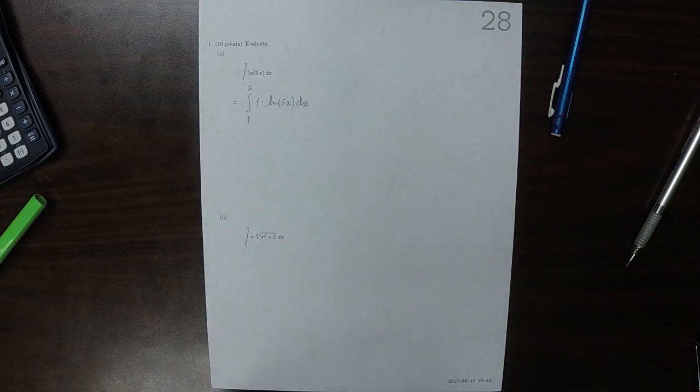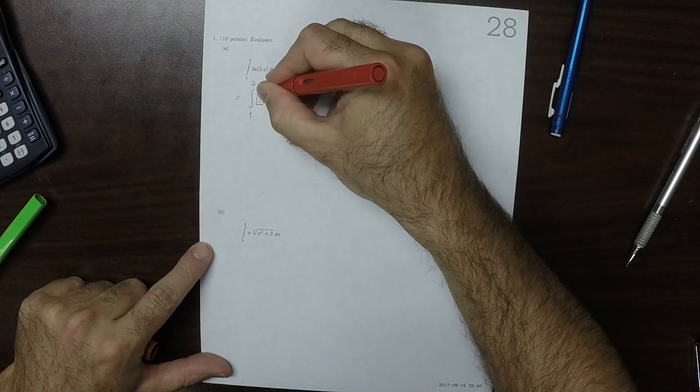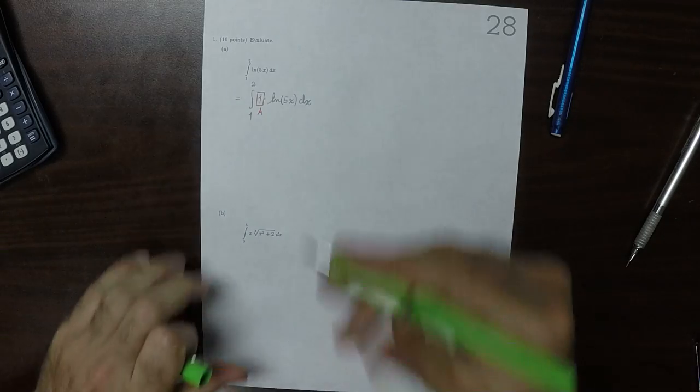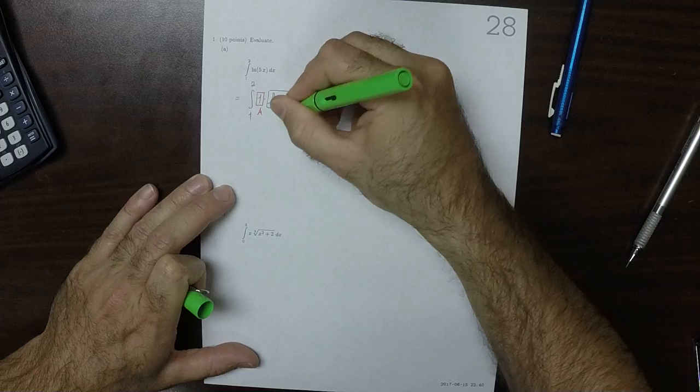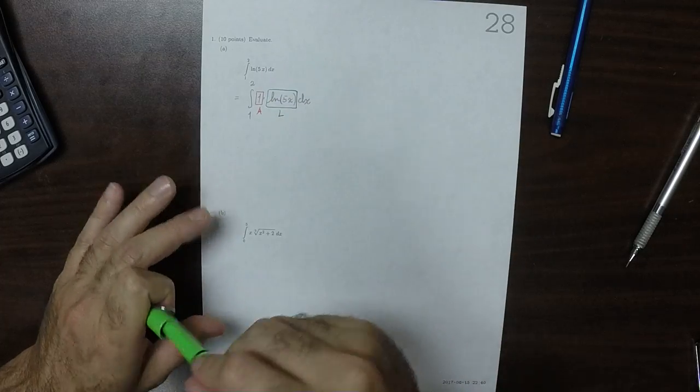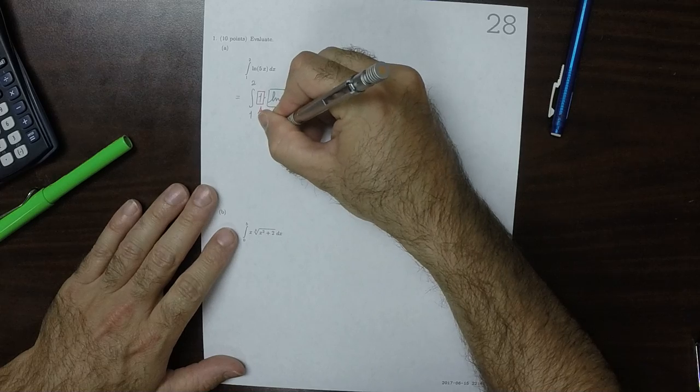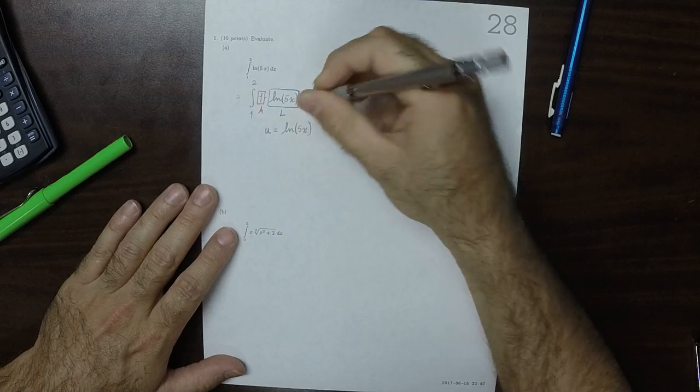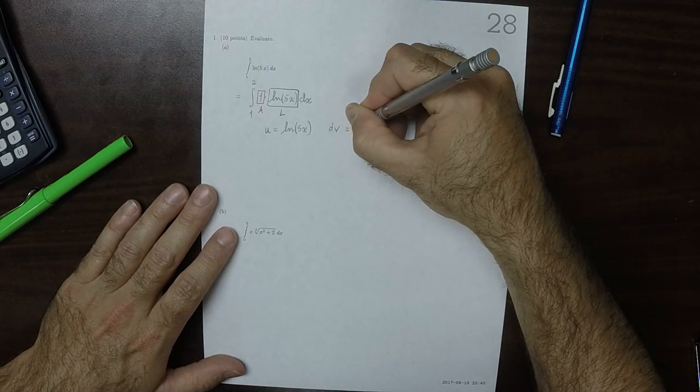And I'm going to write it that way because I can see that I'm going to have to use integration by parts. I'll reckon this as being the algebraic part, and this a logarithmic part. And as a result, I'm going to take u to be the logarithmic part, and dv to be everything else.